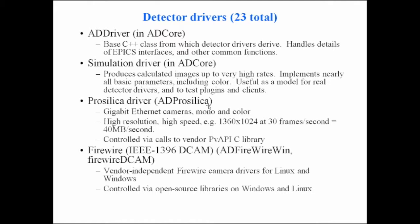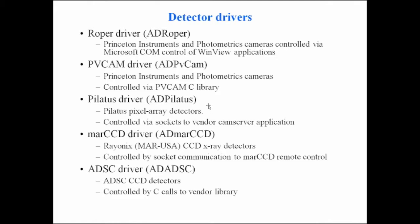There's a Roper driver for Princeton Instruments and Photometrics cameras — an example of controlling a vendor application. Princeton Instruments provides an application called WinView that can be automated by the Microsoft COM (Component Object Model) mechanism. You can also control almost all the same cameras with the PVCam driver, which instead goes through a vendor C library called PVCam. In principle that should work on Linux.